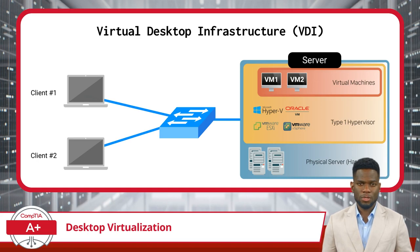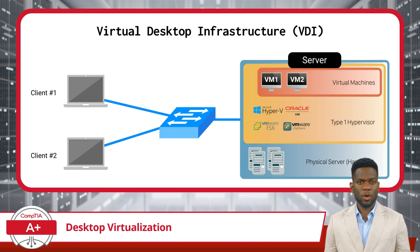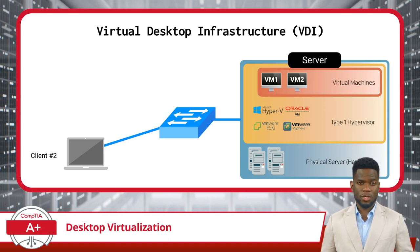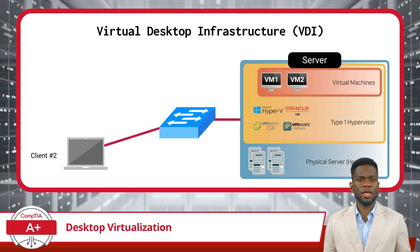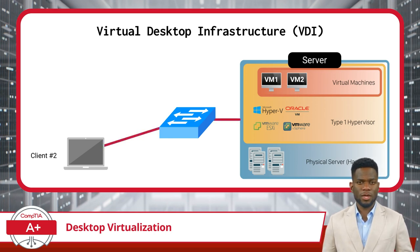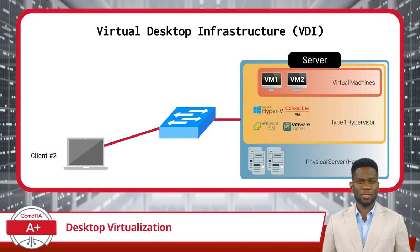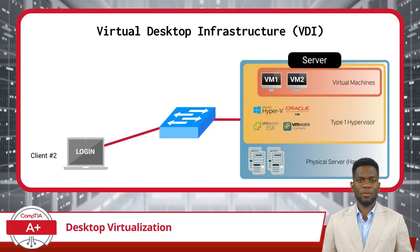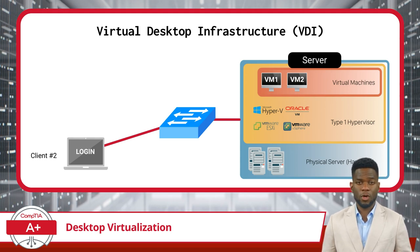Let's walk through how a connection works. Imagine you're at home or in the office and need to do some work. You grab your laptop, which acts as the client device, and turn it on. Now it is time to connect to the server. To do this, you would open up a program or website on your laptop designed to connect you to your virtual desktop. This program acts like a special door that takes you to your virtual desktop. The program will then prompt you to enter your username and password, and once you do, it knows who you are and where to take you.